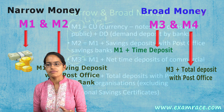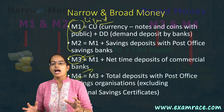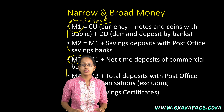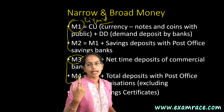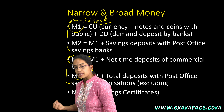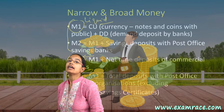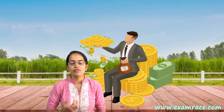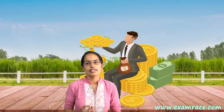Money supply, similar to money demand, is a stock variable. The total stock of money in circulation among the public at a particular point in time is what is known as money supply. It is a very important concept, and therefore we need to understand the significance of narrow money, broad money, and the most and least liquid forms of money in circulation.